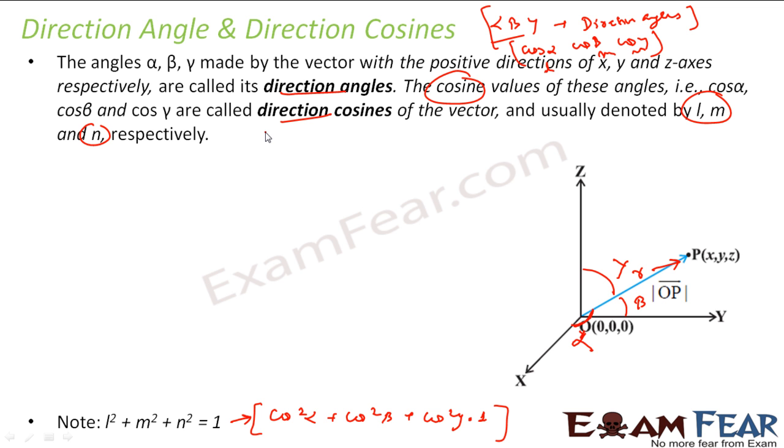So my R vector, I can write as R cos alpha i plus R cos beta j plus R cos gamma k. And this is nothing but x i plus y j plus z k. Both are same actually. So I am writing R vector as x i plus y j plus z k vector. Both are same, representation of same vector.